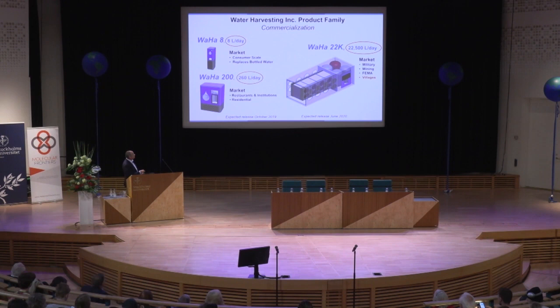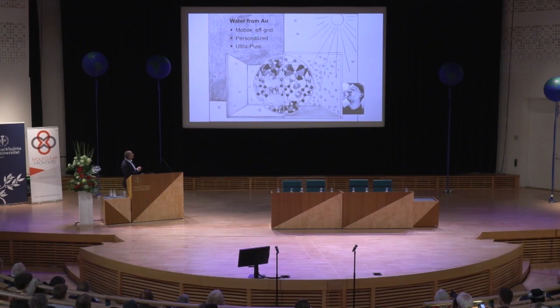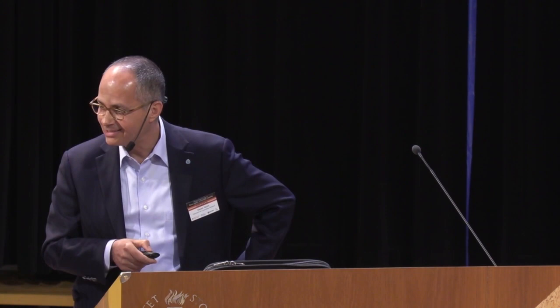So what have we done? We have harvested water from air in desert climate, but we've done more — we've made water mobile. Water can go wherever you go. It's like taking the wired phone and making a wireless phone. Water is mobile, it's personalized — it's your own air, your own water. And it's ultra-pure. How many of us, when we drink water, don't know what's in it? This is ultra-pure water.